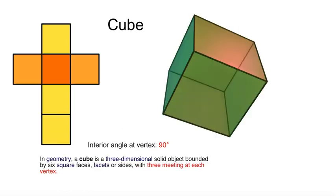Cube. In geometry, a cube is a three-dimensional solid object bounded by six square faces, facets, or sides, with three meeting at each vertex. Again, that is what is needed for it to be a Platonic shape. 90 degrees times three gives you a grand total of 270 degrees, less than 360. Good. You pass.